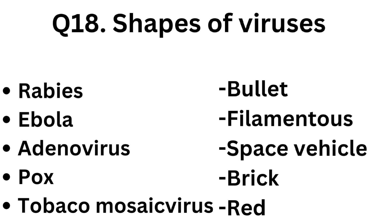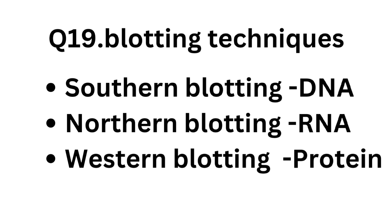Question number eighteen: shapes of viruses. Rabies virus is bullet-shaped. Ebola is filamentous. Adenovirus is space-vehicle-like. Poxvirus is brick-like. Tobacco mosaic virus is rod-shaped. Question number nineteen: blotting techniques. Southern blotting is for DNA, Northern blotting is for RNA, and Western blotting is for protein.